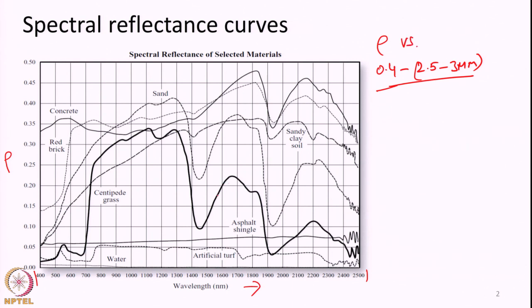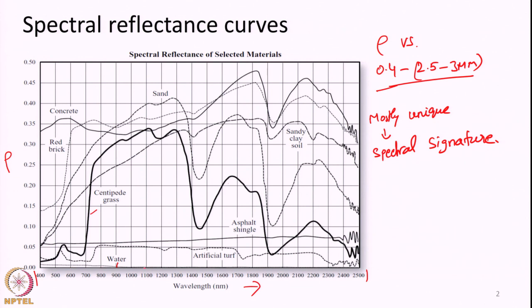We have also seen that this spectral reflectance curve is mostly unique for various earth surface features, and that is why we sometimes call the spectral reflectance curve a spectral signature. Here you can see that for different features — grass (a form of vegetation), water body (the tiny dotted line along the bottom), sand, and concrete — each looks distinctly different. Different features behave differently when EMR interacts with them, and hence we get a unique spectral reflectance curve for each feature.